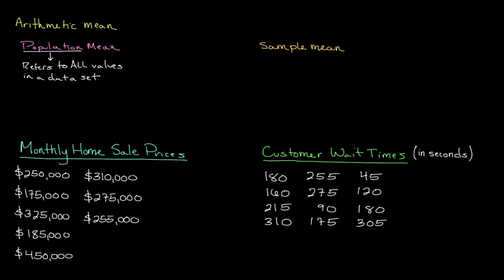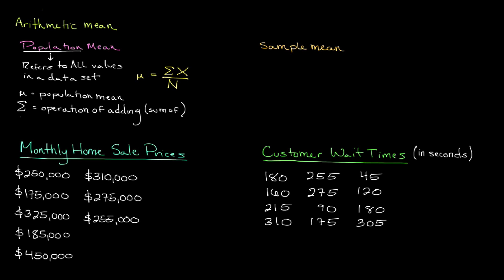The way that we calculate the population mean, which is reflected as mu, is by dividing the sum of all the values in the population by the number of values in that population. This sort of E-shaped symbol is known as sigma, and it represents the sum of. x reflects the values in the population, while n reflects the actual number of values in that population.